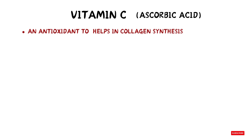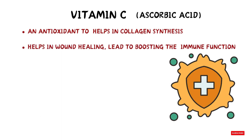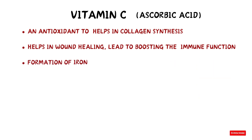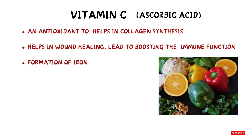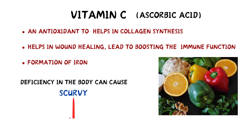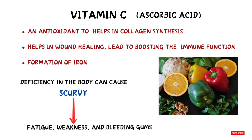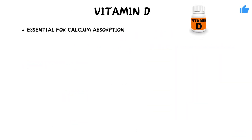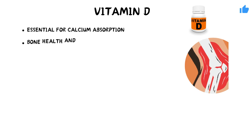Vitamin C also aids in the absorption of iron. It is found in fruits and vegetables such as citrus fruits like oranges and lemons, bell pepper, broccoli, and tomatoes. Deficiency of vitamin C in the body can cause scurvy, leading to fatigue, weakness, and bleeding gums.